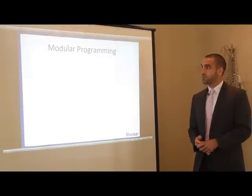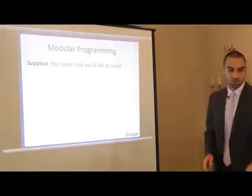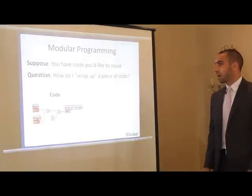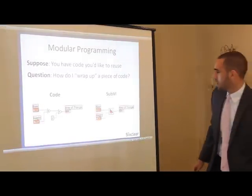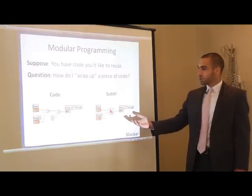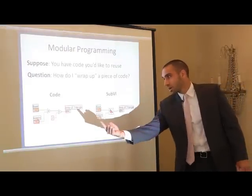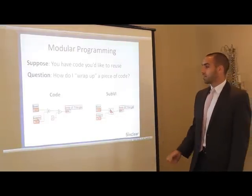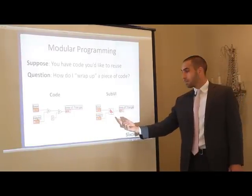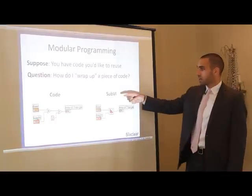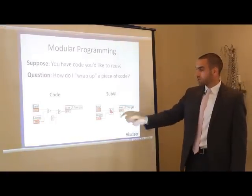So we're going to see how exactly we do this in LabVIEW. Let's suppose we've got some code and we'd like to reuse it. The question is, how do I wrap up a piece of code like this into something like this? If we remember back a few exercises, we wrote a small piece of code which computed the area of a right triangle given its base and its height. It would be nice if I had a little box, a little function in LabVIEW — and of course, we call that a sub-VI. We call these sub-VIs that get reused in our VIs.